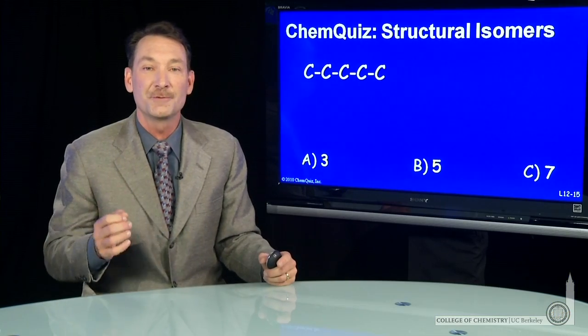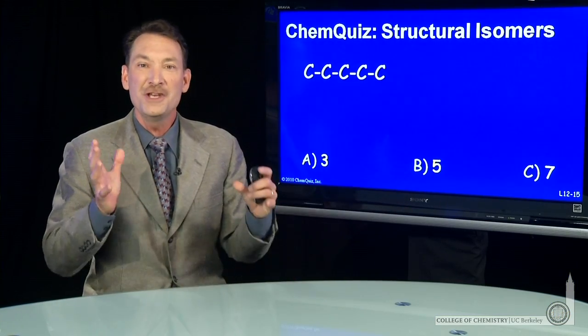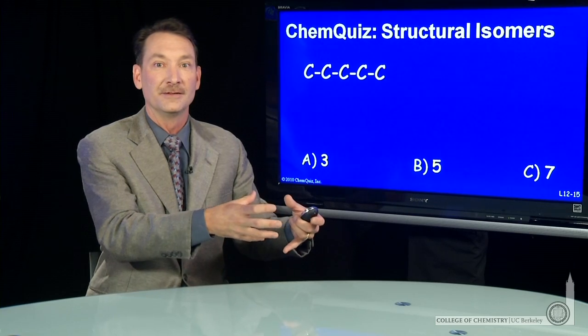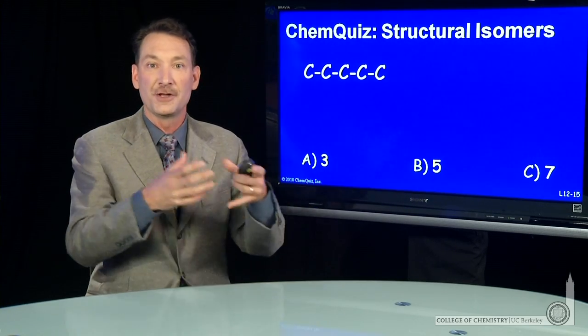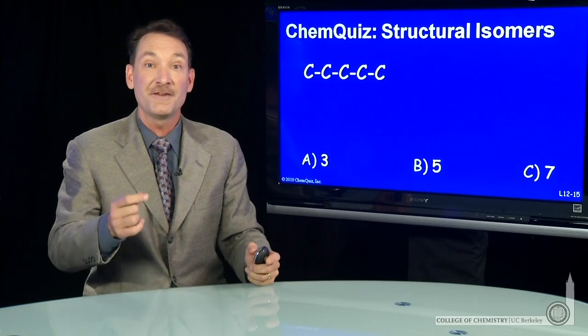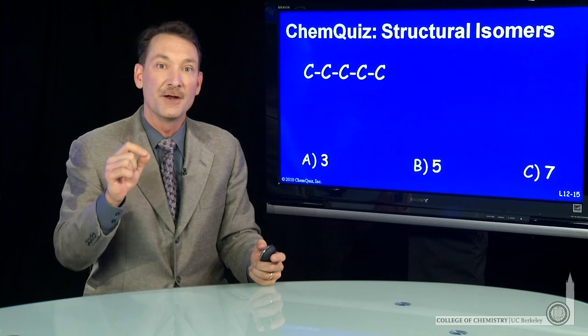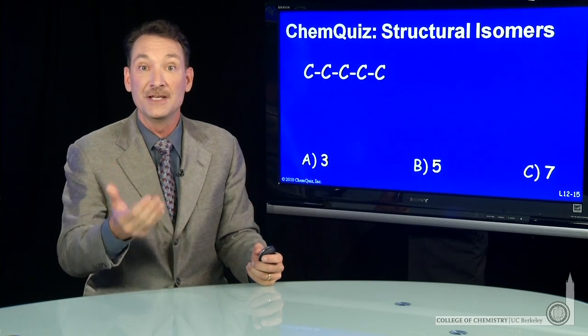We're talking about the structural isomers of pentane. Now, there's no neat way to go from the chemical formula C5H12 to the number of isomers. You pretty much have to scratch them out on paper and rearrange the atoms and then count up the unique combinations.